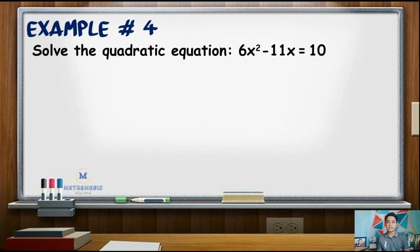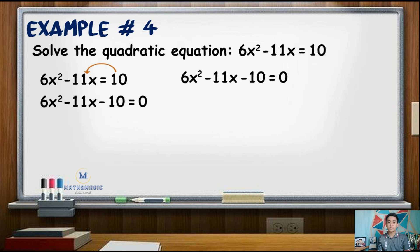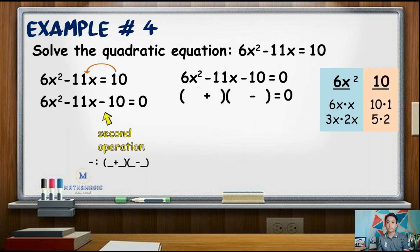For our last example, solve the equation 6x squared minus 11x equals 10. Following the previous steps, equate this equation to zero by transposing positive 10 to the left side. The equation now is 6x squared minus 11x minus 10 equals 0. Next, factor the first and last terms. 6x squared has factors of 6x times x and 3x times 2x. Meanwhile, the last term 10 has factors of 10 times 1 and 5 times 2.